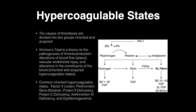The next topic is hypercoagulable states. The causes of thrombosis are divided into two groups: inherited and acquired. Virchow's triad is a theory of the pathogenesis of thromboembolism with three components: alterations of blood flow and stasis, vascular endothelial injury, and alterations of blood constituents, which can be inherited or acquired hypercoagulable states.